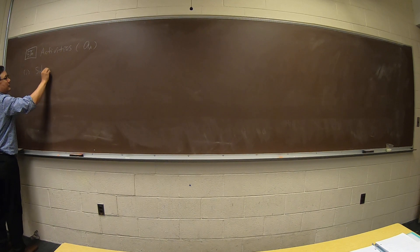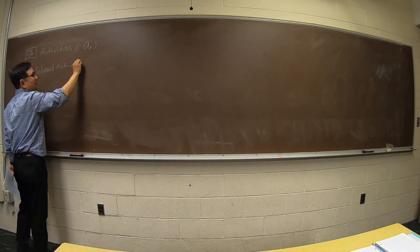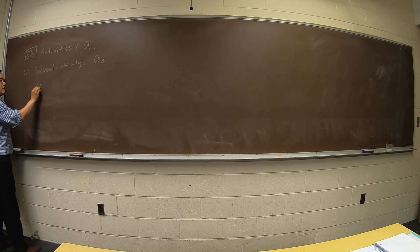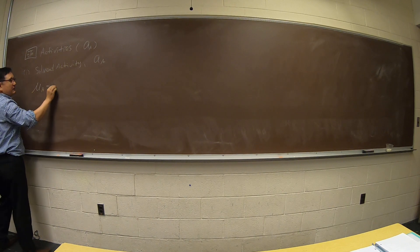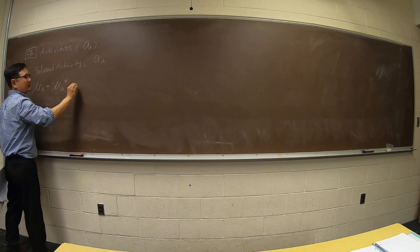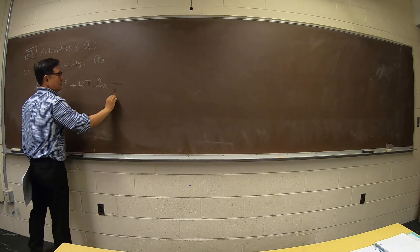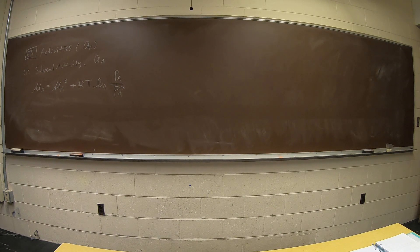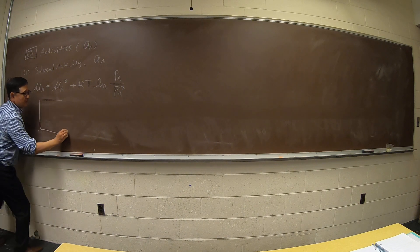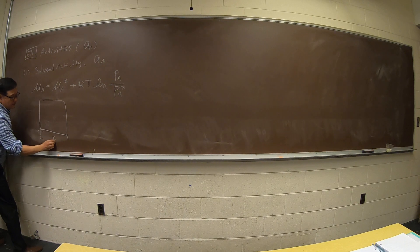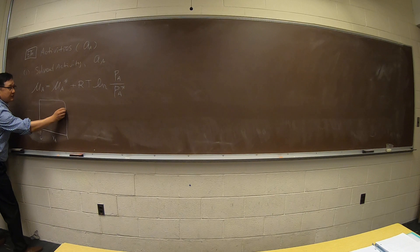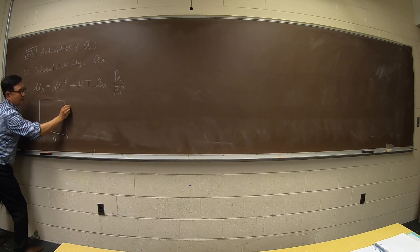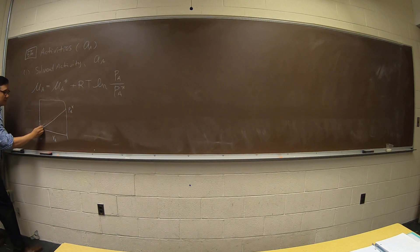One is for the solvent activity. I'm going to write the chemical potential of A in a mixture and we call the potential the pure state. This is always true. So what that means is if I have an A and B mixture, this is a composition and the partial pressure is PA star, and this is a case of something that follows Raoult's Law.